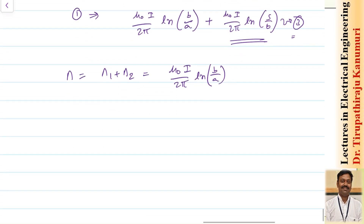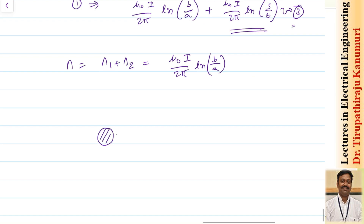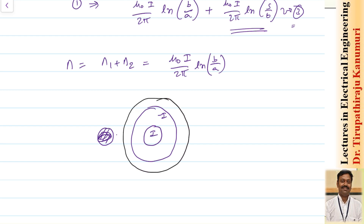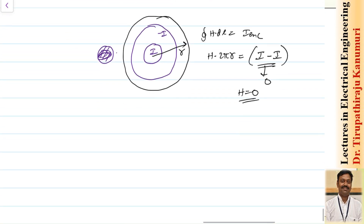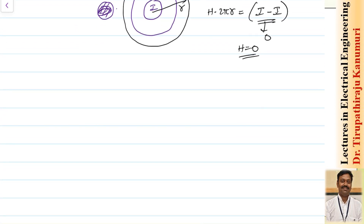Outside the cable, the inner conductor carries +I and the outer conductor carries −I. By Ampere's law, the enclosed current is zero, so H = 0 and the magnetic field outside the cable is zero — the two currents cancel completely.